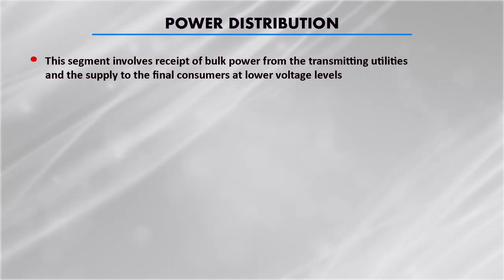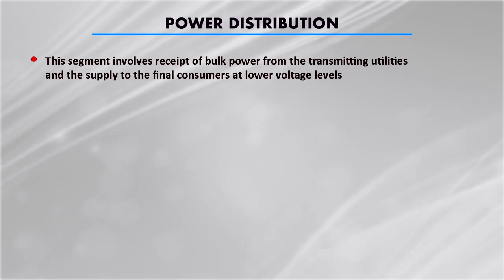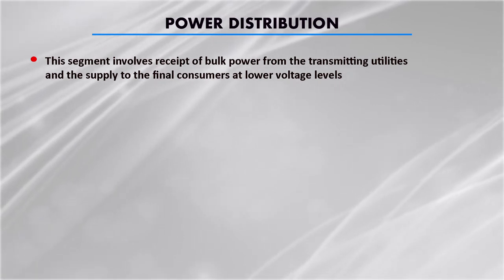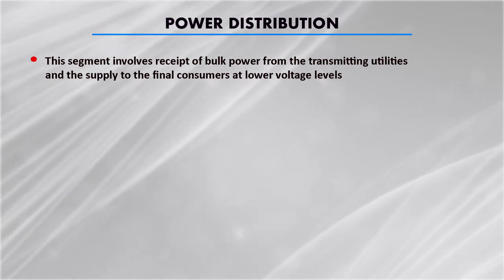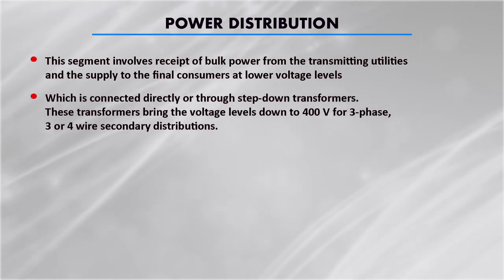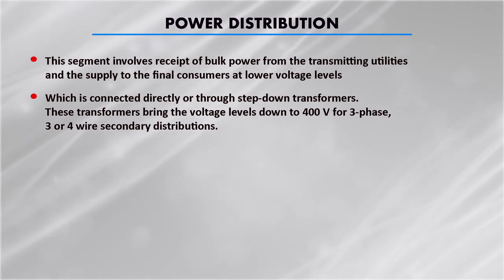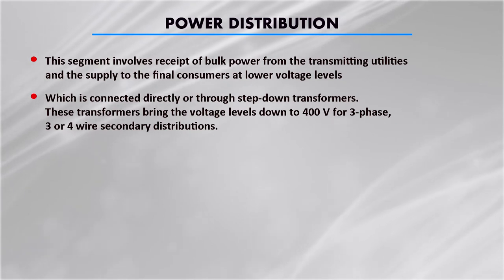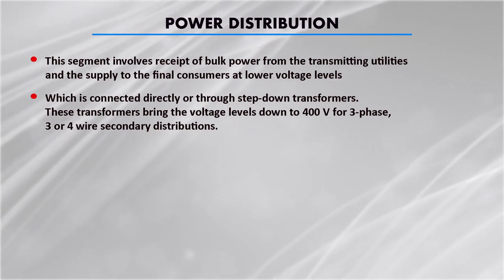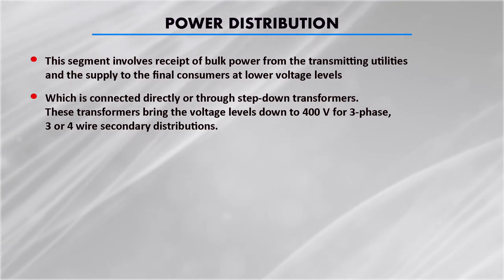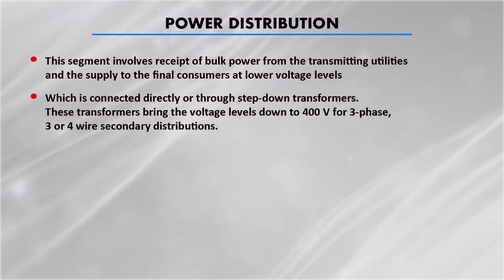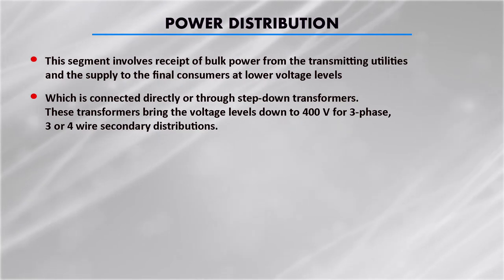The power distribution segment involves receipt of bulk power from the transmitting utilities and supply to final consumers at lower voltage levels. Distribution is generally made at 11 kV, 6.6 kV, or 3.3 kV. This constitutes the last link to consumers, connected directly or through step-down transformers. Transformers in the substation bring the voltage level down to 400 volt for three phase, three wire or four wire secondary distribution. The fourth wire is generally called the neutral or return wire.